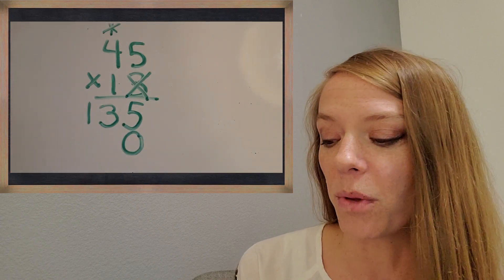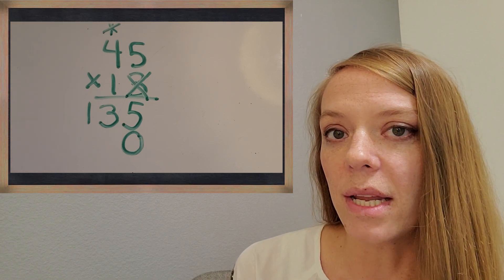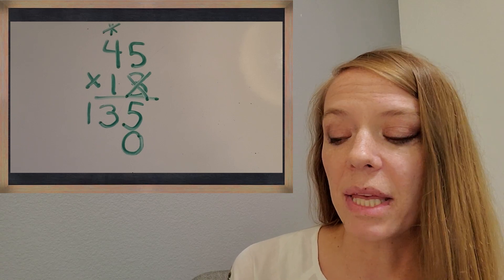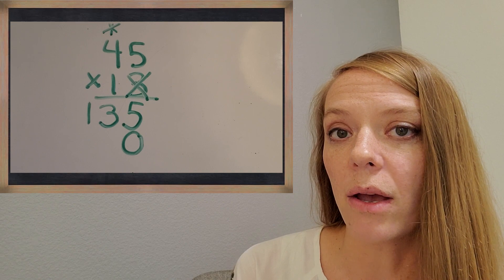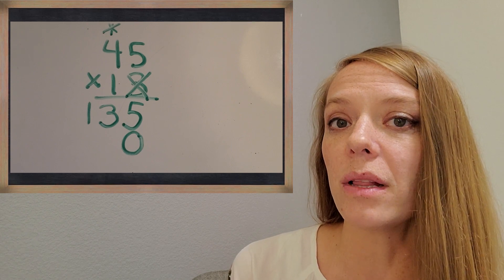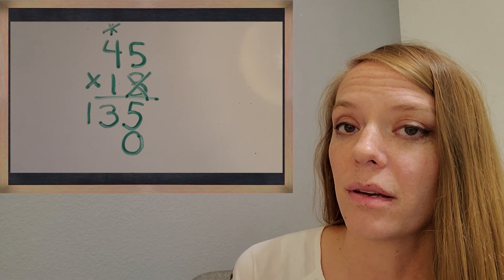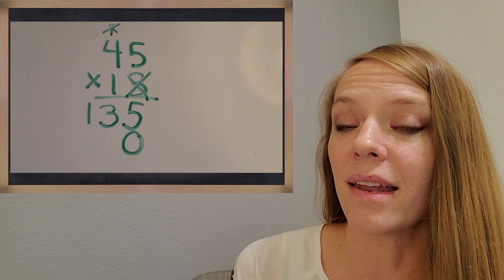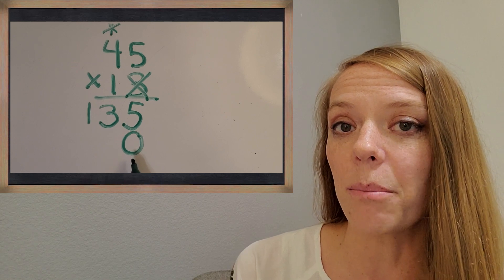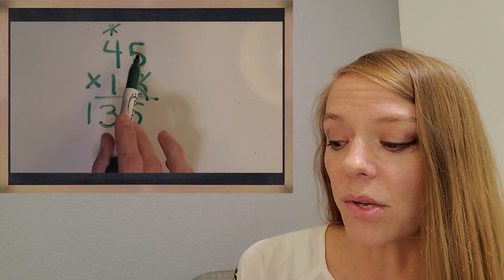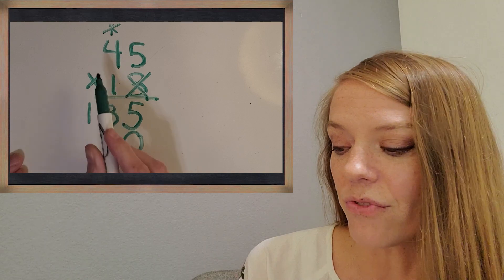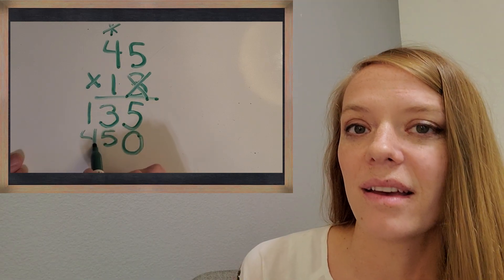The reason why we need that zero is because the next things we're going to multiply — you could probably guess this — are my 45 times that one, which is really worth 10 since it's in the tens place. That's why I need a zero on the end of that part of the answer. So let's start now. What is five times one? Five. And then four times one is four.